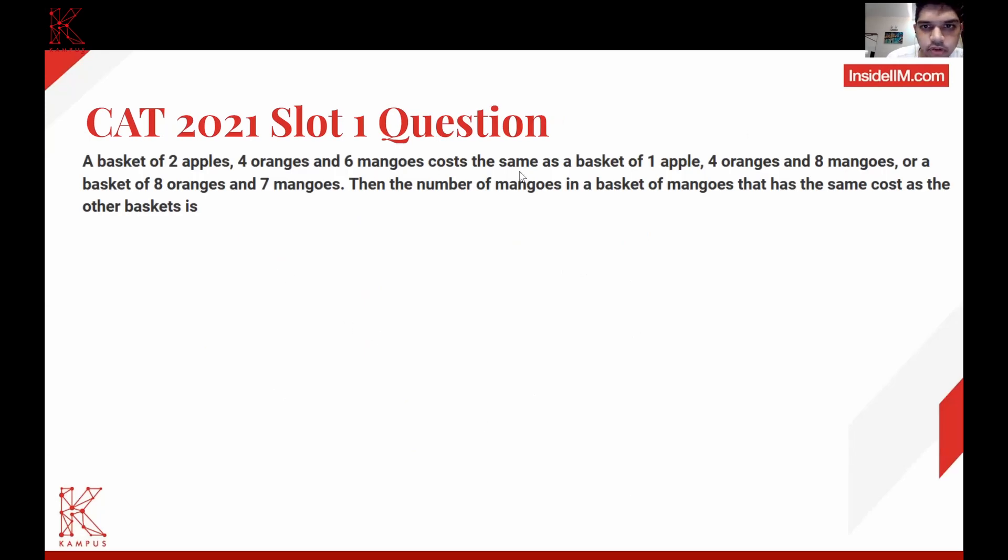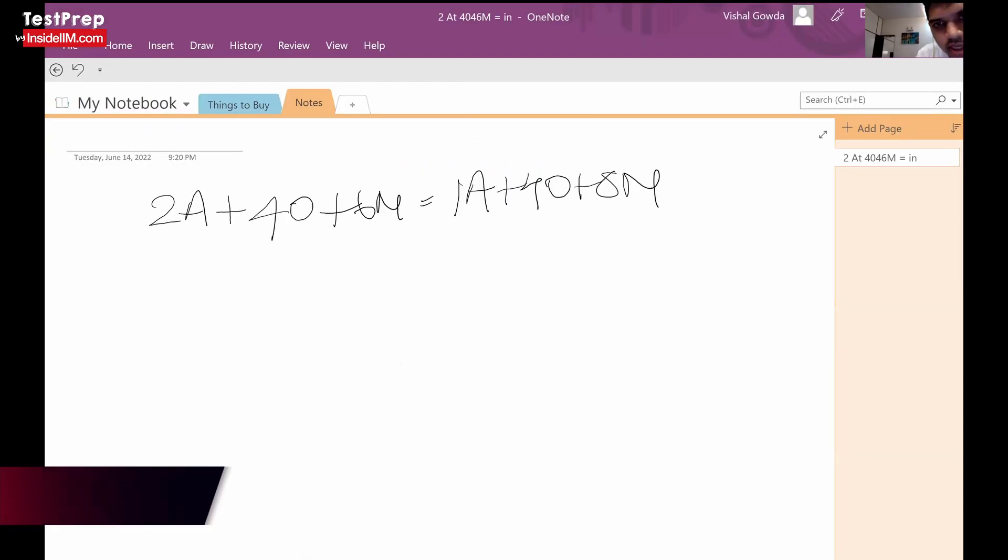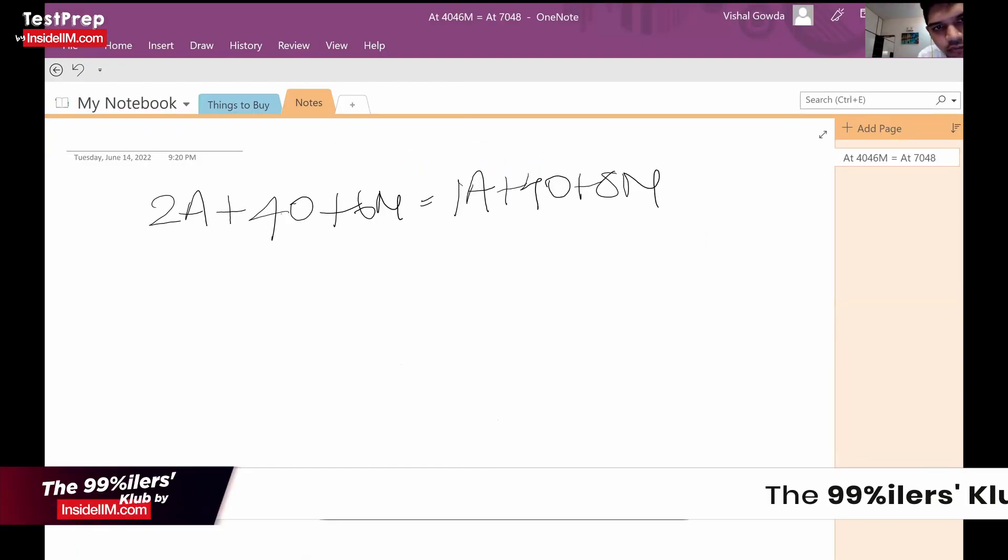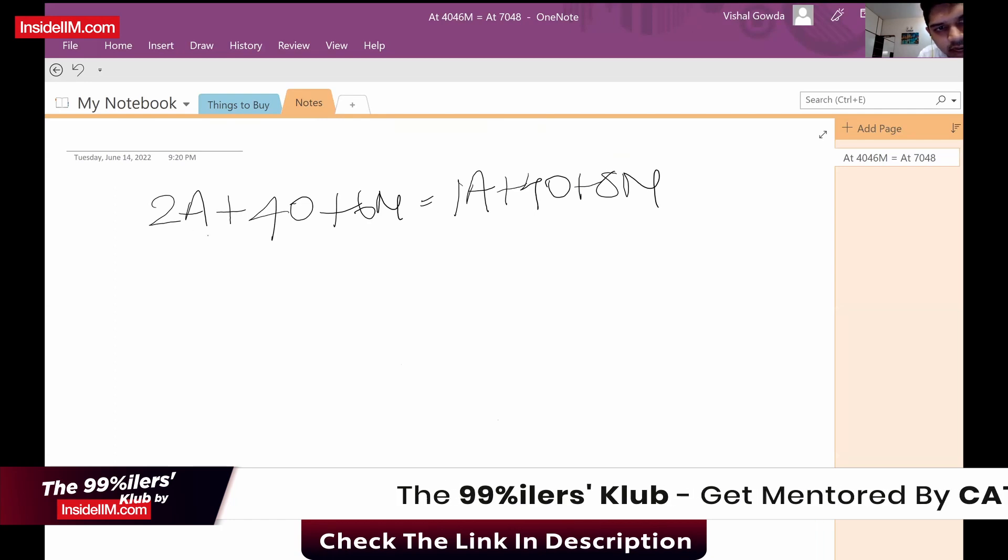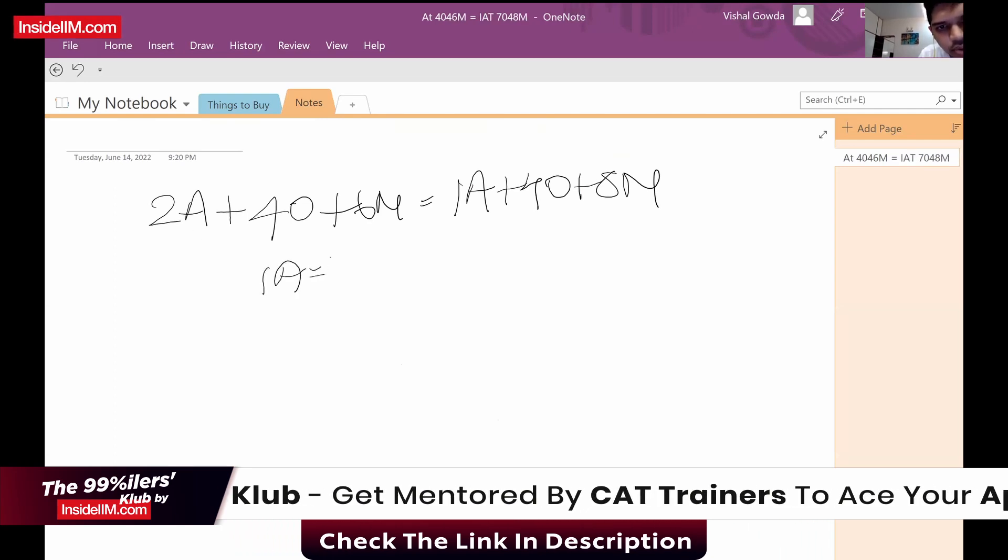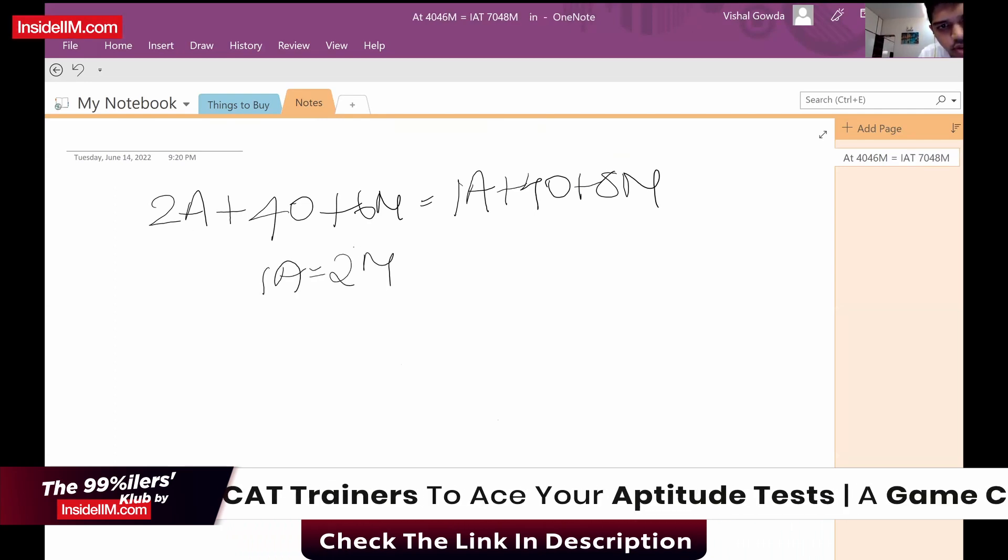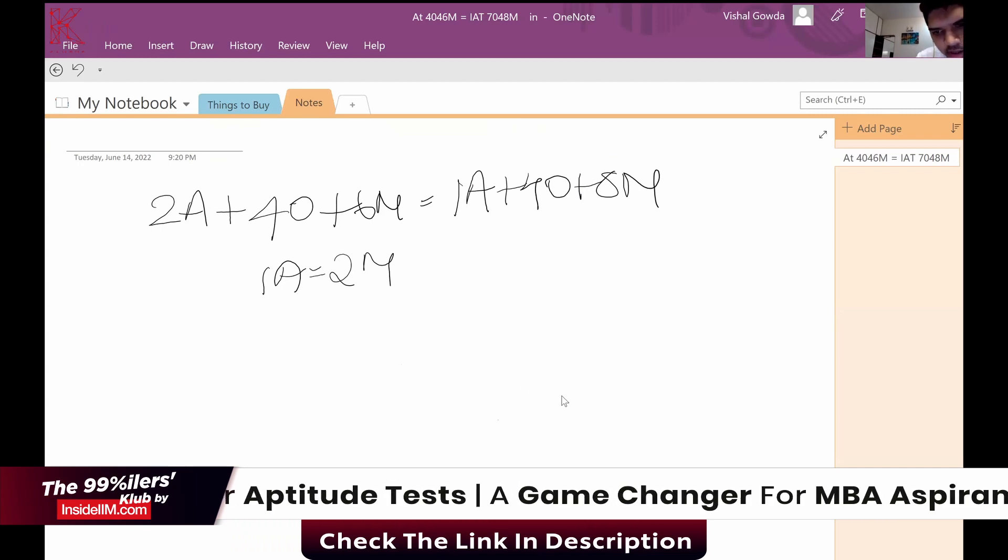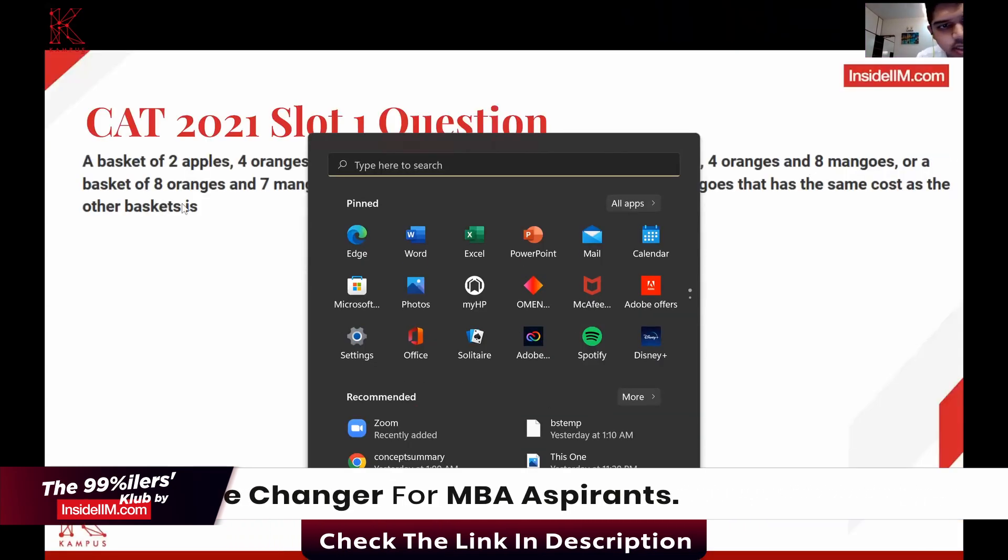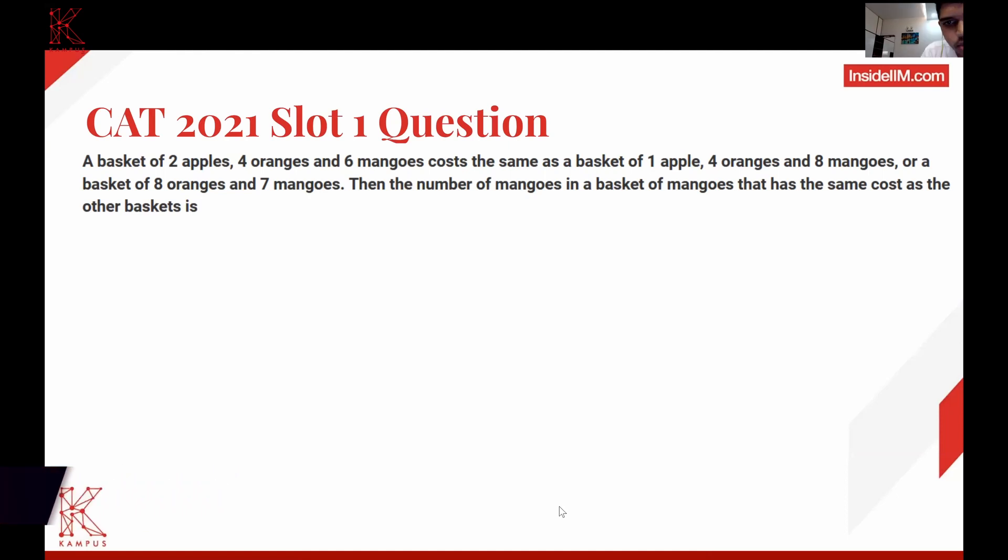This one is: with a certain amount of money you can buy three types of fruits. They've given different numbers of fruits that you can buy with the same money—two apples, four oranges, and six mangoes. Immediately you should pick up that one apple equals two mangoes from this equation.